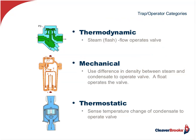As far as trap types: we've got thermodynamic, mechanical, and thermostatic. In the thermodynamic category, the most common is the disk. There's also impulse, labyrinth, and orifice plate. Mechanical traps could be the float type, the float thermostatic type, open bucket, or an inverted bucket. Thermostatic can either be a balanced pressure, a liquid expansion, or bimetal type.